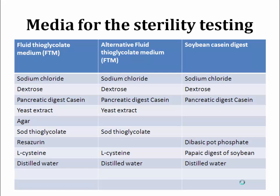There are three different media commonly used for sterility testing: first, Fluid Thioglycollate Medium (FTM); second, Alternative Fluid Thioglycollate Medium; and third, Soybean Casein Digested Medium. For Fluid Thioglycollate Medium, the ingredients used are sodium chloride, dextrose, pancreatic digested casein, yeast extract, agar, sodium thioglycollate, resazurin, L-cystine, and distilled water.